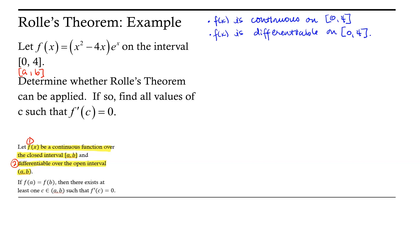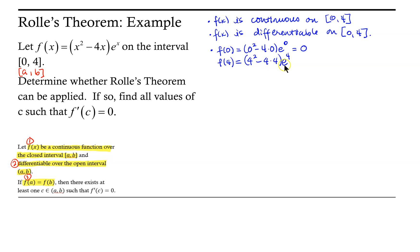The third criterion is that f(a) must equal f(b) — the function at the left endpoint must equal the function at the right endpoint. f(0) = (0² - 4·0)·e⁰ = 0. For f(4): 4² - 4·4 = 16 - 16 = 0, and 0 times e⁴ is also 0. So f(0) equals f(4), and the third criterion is satisfied.